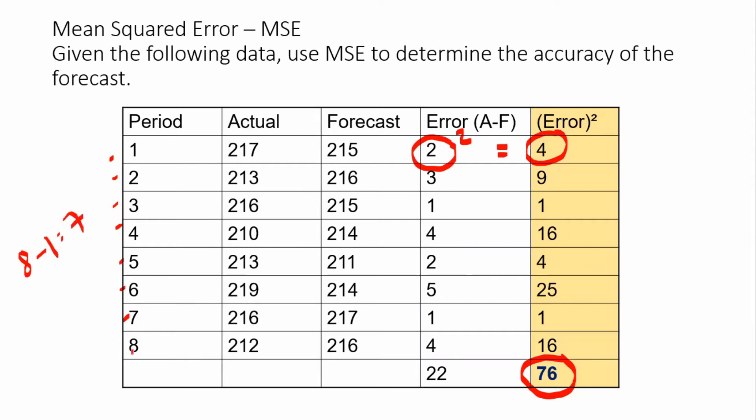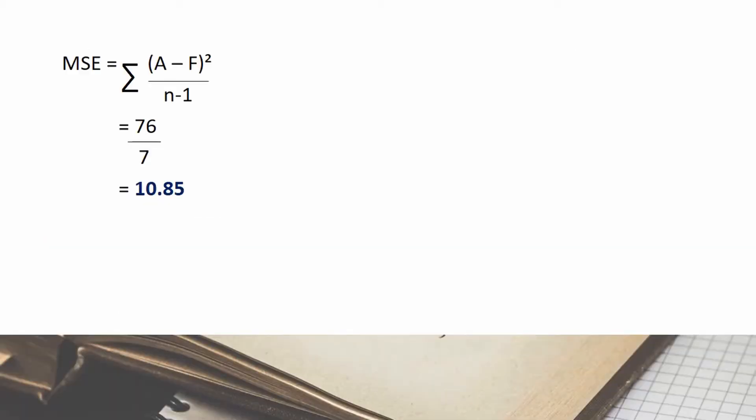We square to always get a positive number, and because squaring emphasizes large differences. So 76 divided by 7 gives us 10.85. A smaller MSE close to 0 is preferred, as it shows that your data values have smaller errors.